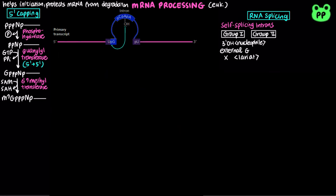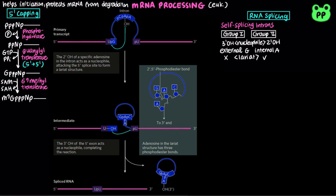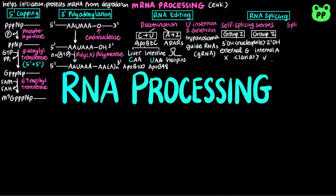In group 2 introns, the 2' hydroxyl group of an internal adenosine acts as a nucleophile, attacking the 5' splice site to form a lariat structure, in which the branch adenosine contains three phosphodiester bonds at the 2', 3', and 5' ends. The 3' hydroxyl group of the 5' exon then becomes the nucleophile and attacks the phosphate at the 3' end of the intron, releasing the intron lariat and the spliced mRNA.